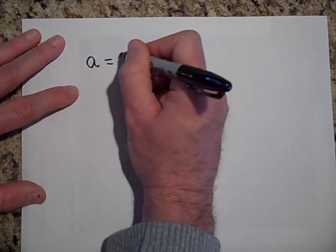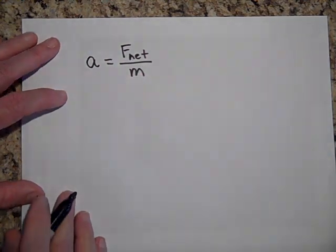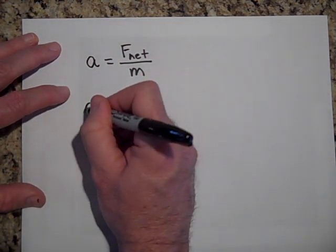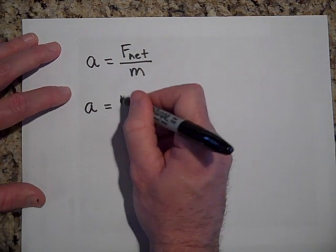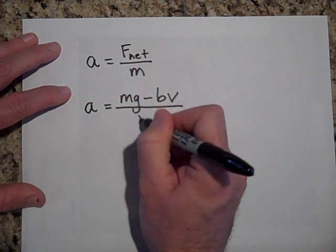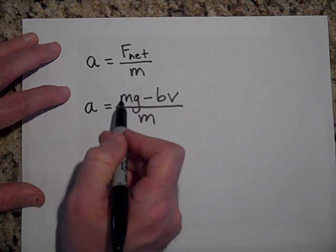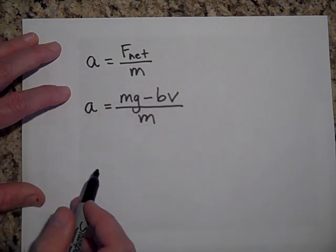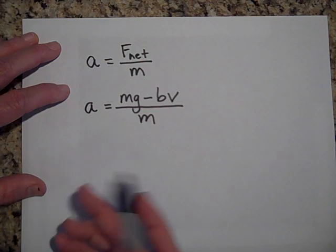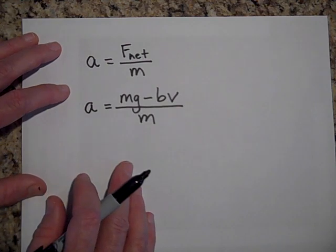If I were to take and start out with Newton's second law, a equals f net over m, then a is equal to mg minus bv all over m. We're calling down positive, so that's why I'm calling that a positive value and then that would be a negative value. Down is positive. You could go the other way but we're going to call down positive.